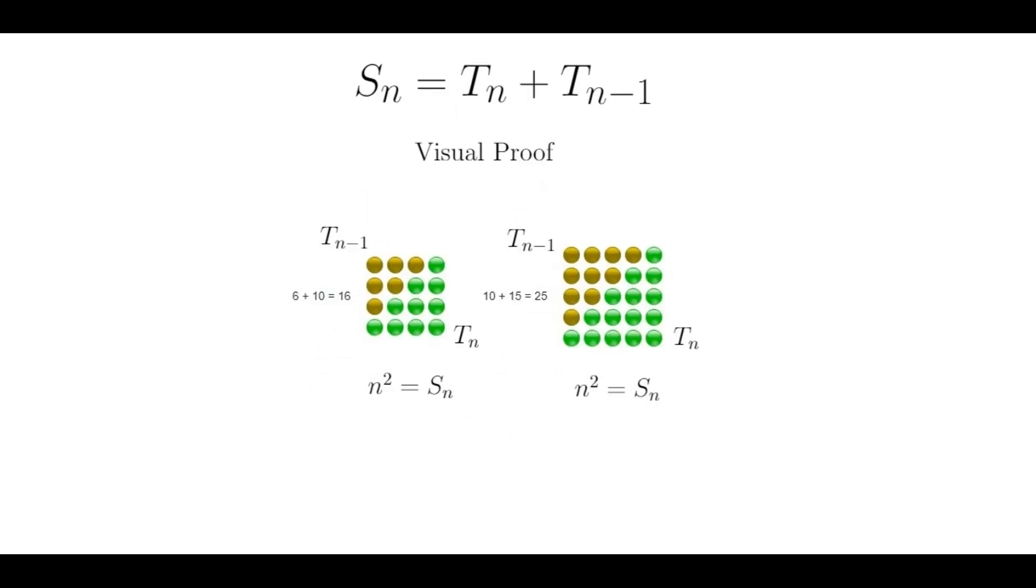Also, if I draw the nth square number as an array of objects with n rows and n columns, I can divide the square into two triangles along the diagonal. The smaller triangle represents Tn minus 1, while the larger triangle is Tn. So we see right away that n squared is equal to Tn minus 1 plus Tn, and no algebra was required.